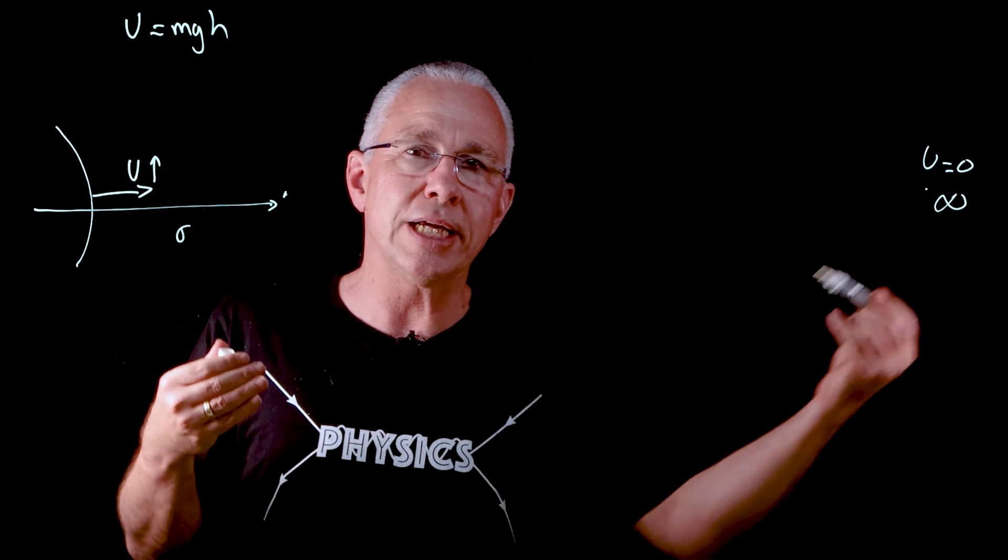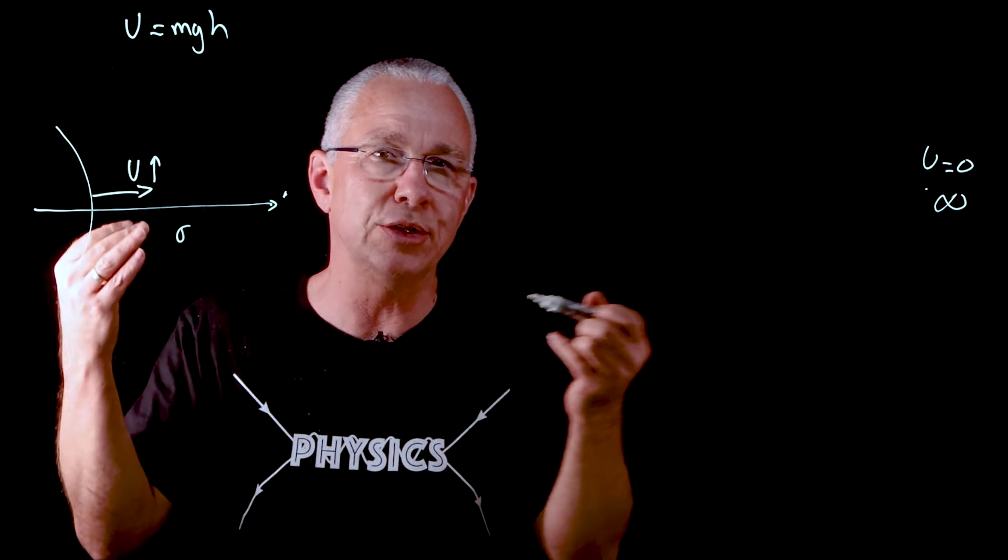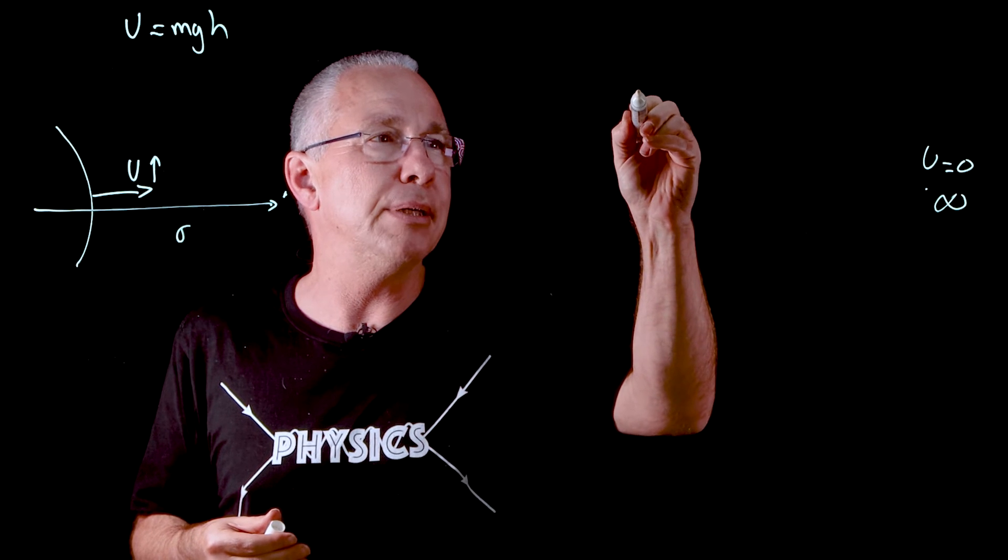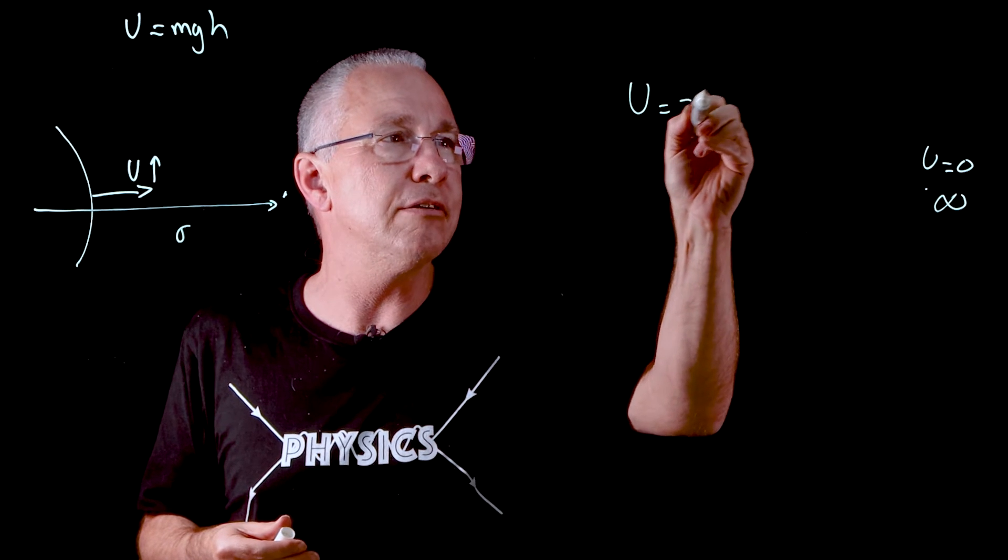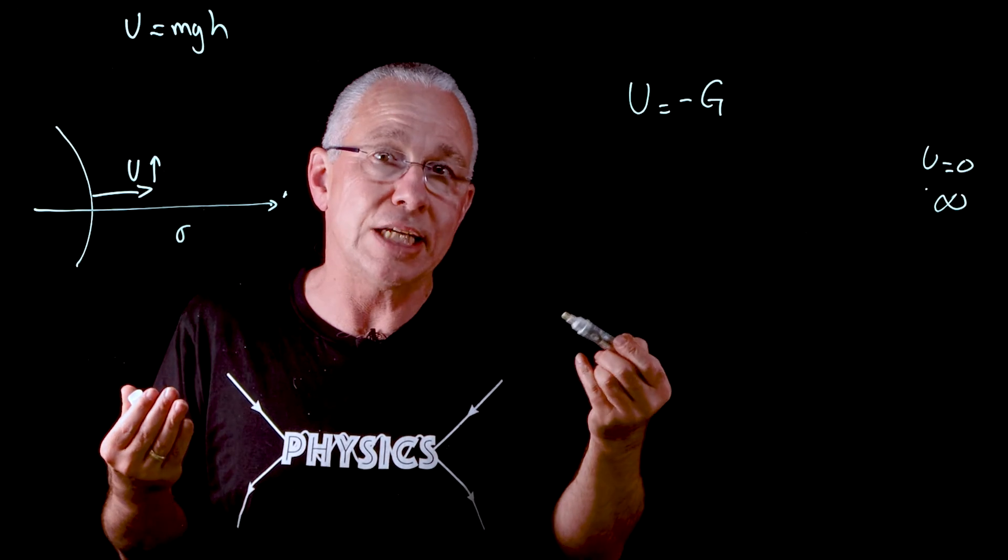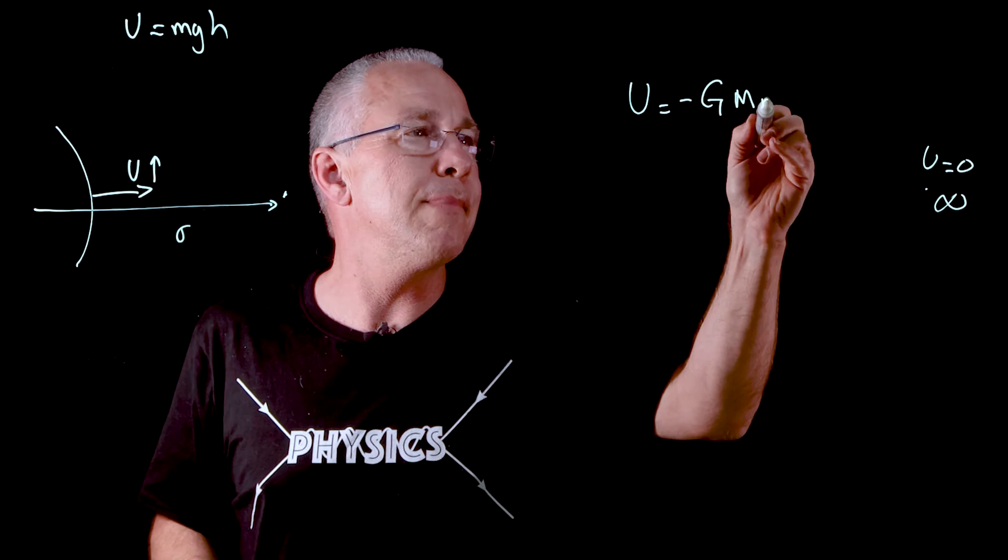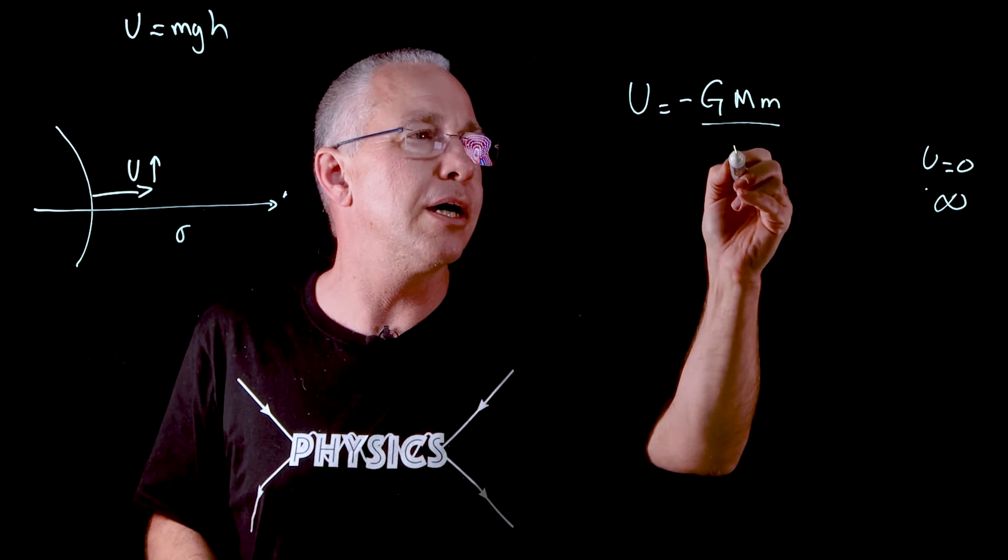And because we're doing work in that direction, we're actually going to get a negative value. And that value ends up being equal to negative capital G, which is a gravitational constant, the mass of this planet over here, the mass of the object divided by r.